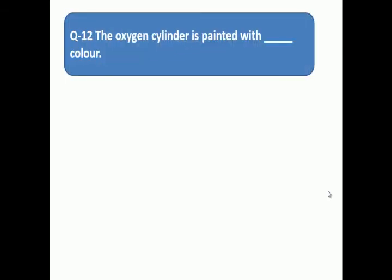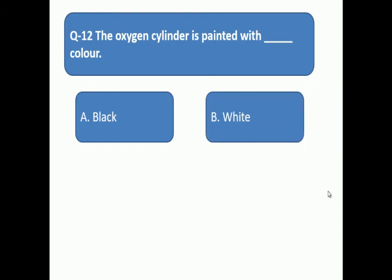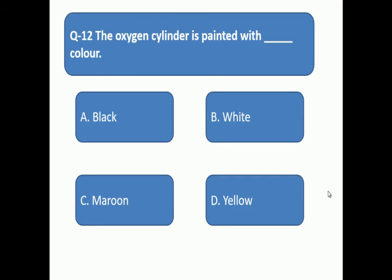Question 12: The oxygen cylinder is painted with which color? Oxygen cylinder is painted with which color? A: black, B: white, C: maroon, D: yellow.